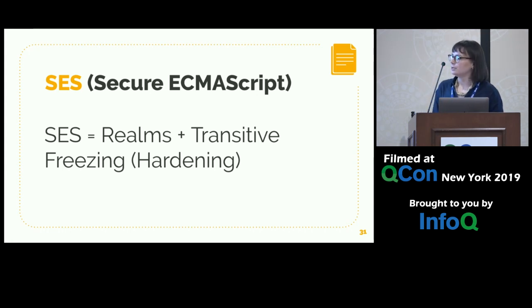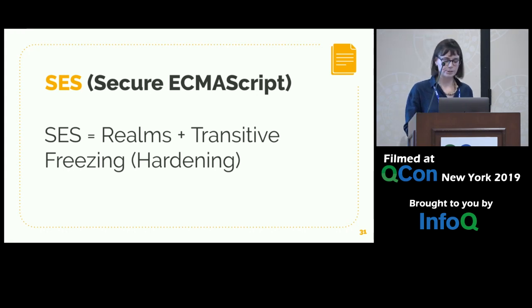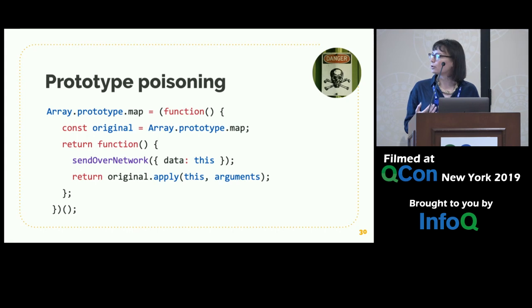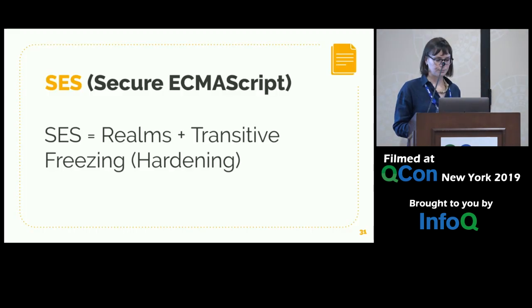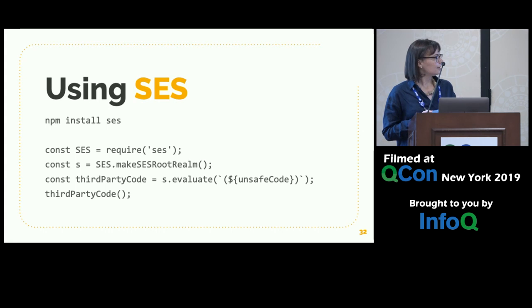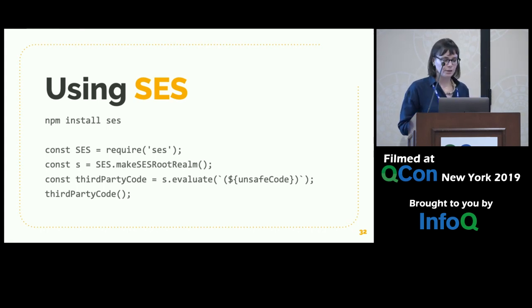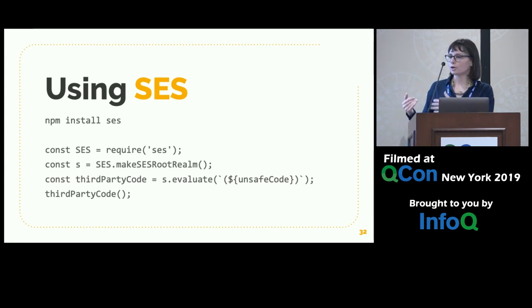To solve prototype poisoning, there's a thing called SES, or Secure ECMAScript. You can think of SES as Realms plus transitive freezing or hardening. When someone tries to set array.prototype.map to something else, it simply won't work — the object is frozen, you can't change the values. Using SES is very easy — it's a package right now. You can do npm install SES, require it, call makeRootRealm, and then evaluate the code. You do have to stringify the code, which is a developer ergonomics issue we're still working out.